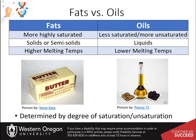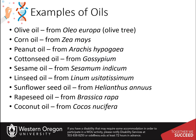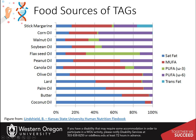TAGs are often referred to as fats and oils. Fats tend to be more highly saturated than oils, and thus have higher melting temperatures. They are typically solids at room temperature. Oils, on the other hand, have lower melting temperatures and are typically liquids at room temperature. Here are some examples of common oils. This diagram gives you a sense of the mixtures of fatty acids found in different TAG sources. Note that coconut oil has a high degree of saturated fatty acids incorporated into the TAG structure. This increases the melting temperature of this oil, causing it to be a solid at room temperature.